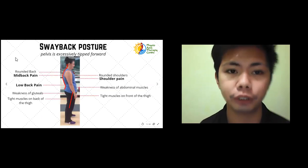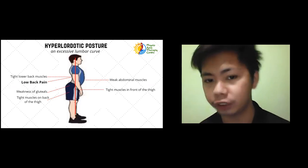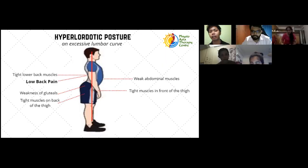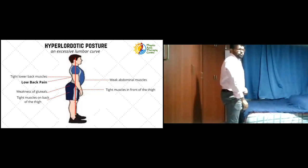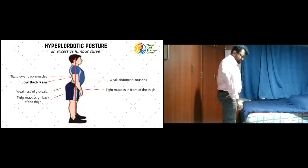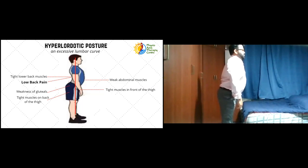Next is the hyperlordotic posture, defined as an excessive lumbar curve. Shannon will now demonstrate what hyperlordotic posture looks like in real life. This is usually seen in military personnel who exaggerate their posture to pump their chest out, and also in those who like to stick their bottoms out. Shannon demonstrates a good erect posture first, and then a hyperlordotic posture by pushing the hips backward excessively, causing an increased arch on the low back.